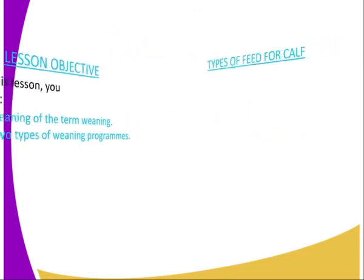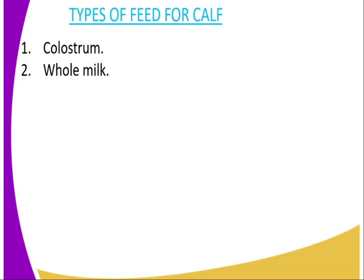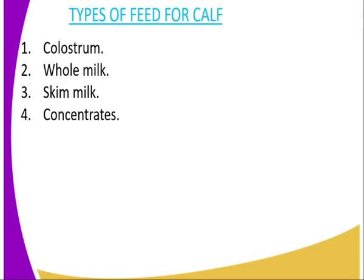Types of feed for calves: the first one is colostrum, that is the first milk. The second type of feed to be given to the calf is whole milk, which replaces the colostrum after one week or after four days. Then we have skimmed milk, and then we have concentrates.